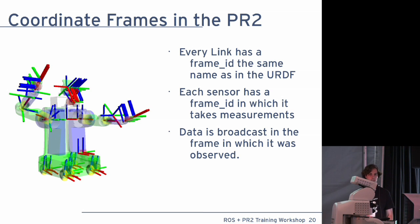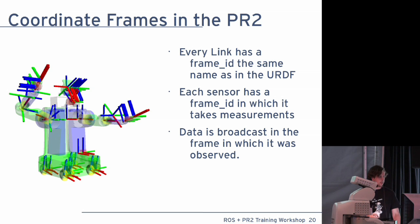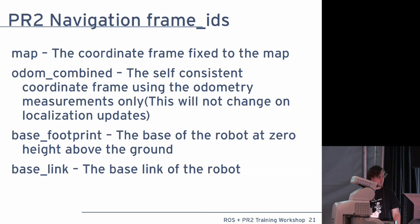Each laser has a frame. Each camera actually has a couple of frames — one is the optical frame and one is the physical frame. And just a quick summary: you don't have to memorize these. This is just to give you an idea of how many frames there are and what they are.